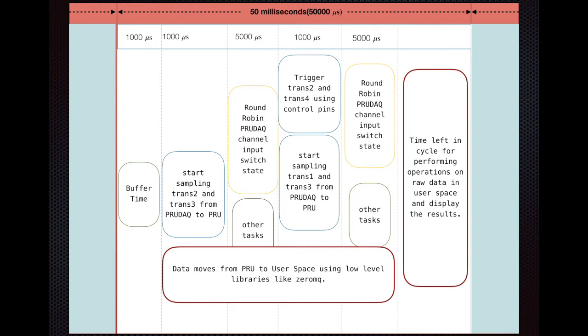So 4,000 microseconds can be left for buffer time. In the next 2,000 microseconds we fire the trigger for transducers 1 and 3 and start sampling the channels trans 2 and trans 3 from PRU0 to PRU.